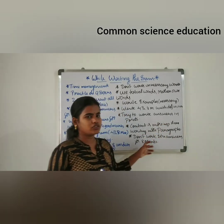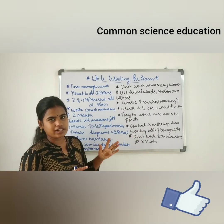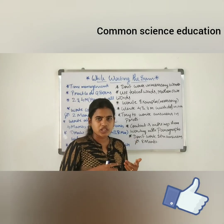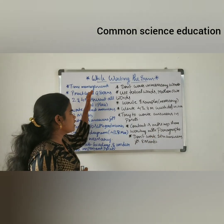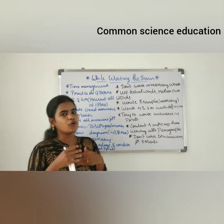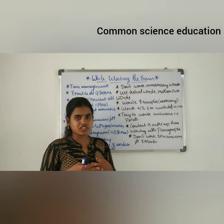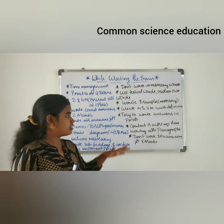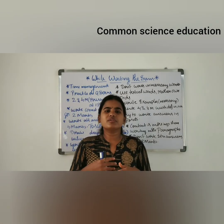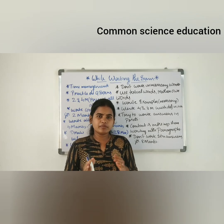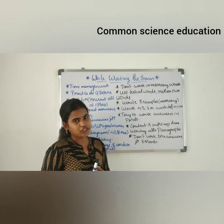Don't write extra answers beyond what is required for the given marks. For 4 marks, write only the points needed; for 8 marks, write the required content without adding extra. These are the important tips for scoring well in your intermediate botany, zoology, and science paper presentation. This is all for today's video — thanks for watching.